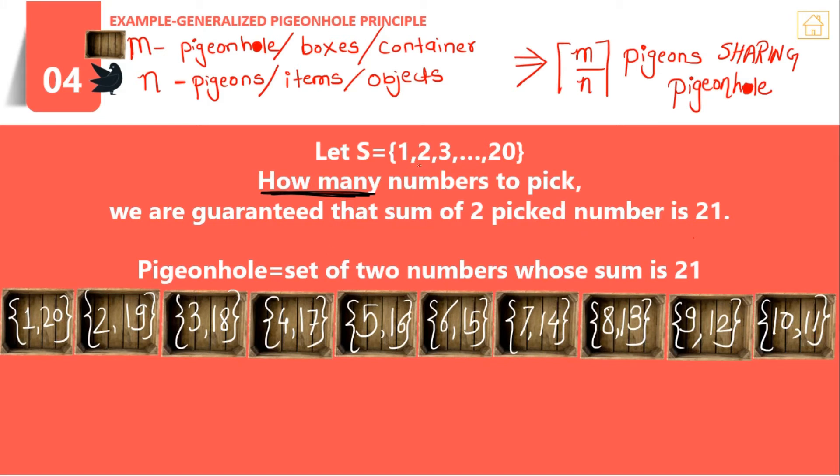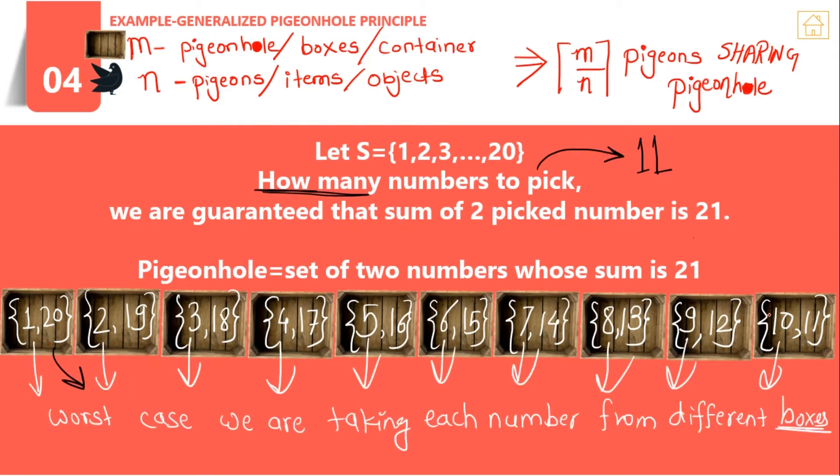Next example: let S be a set with elements from 1 to 20. How many numbers to pick are we guaranteed that the sum of 2 picked numbers is 21? Our pigeonhole will be all possible pairs of numbers whose sum is 21. All the possibilities are: {1,20}, {2,19}, {3,18}, {4,17}, {5,16}, {6,15}, and so on. These are the elements where their individual elements sum to 21. There are 10 pigeonholes in our example.